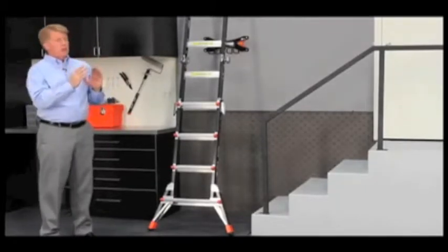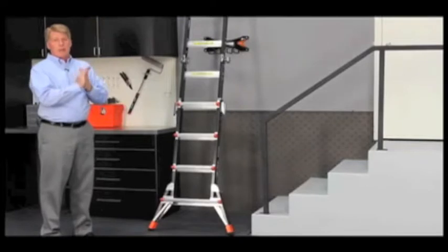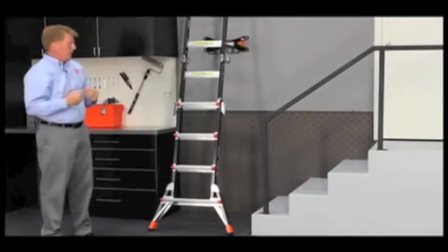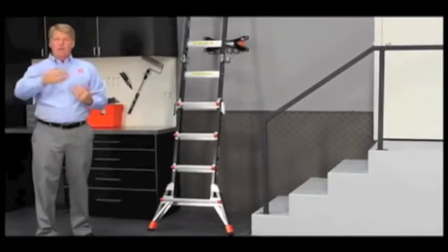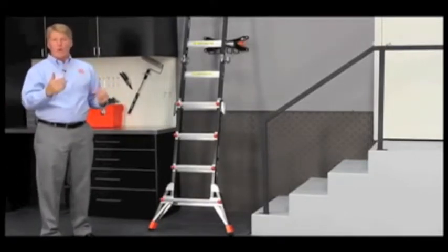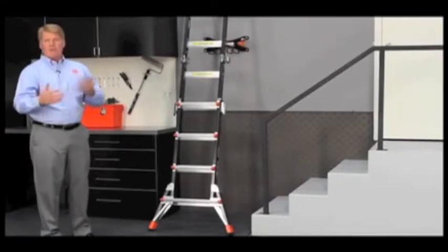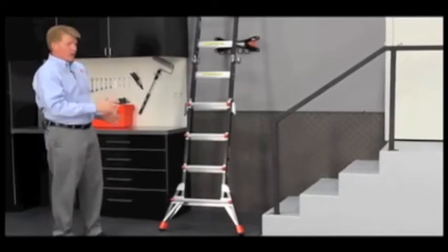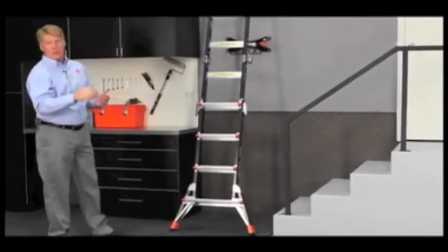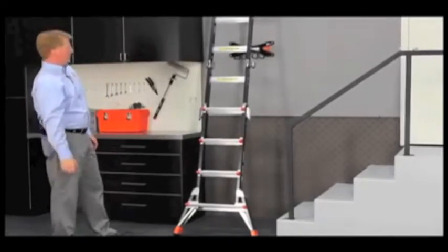As you're setting those ladders up and down, you want to make sure that you look for hazards. You want to make sure that you never set it up in front of a doorway that's going to open your direction, and you want to make sure that it's not in a path of travel around a corner so that a forklift's not going to come around the corner and not have time to see you before they run into you. If any of those things, you need to put out cones or markers or have somebody watch if that's the only place that you can set up.